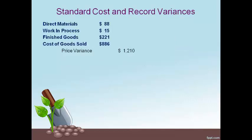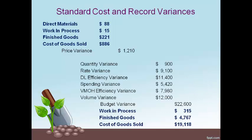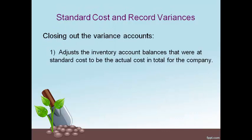The inventory and cost of goods sold accounts are adjusted by the variance to close out the variance accounts. A debit variance is credited to make the balance go to zero, and a credit balance is debited to adjust the variance to zero. Journal entries will look similar to this. Closing out the variance accounts adjusts the inventory and cost of goods sold account balances in total to be the actual total cost of the company.